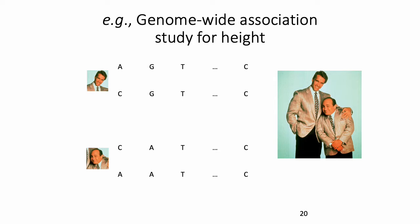The basic idea of an association study for continuous traits is that most humans are diploid. For each given SNP in the human genome, most SNPs are biallelic, so for any given SNP position you should see at most two different alleles. Here columns represent different SNPs and rows represent different chromosomes for two different individuals.